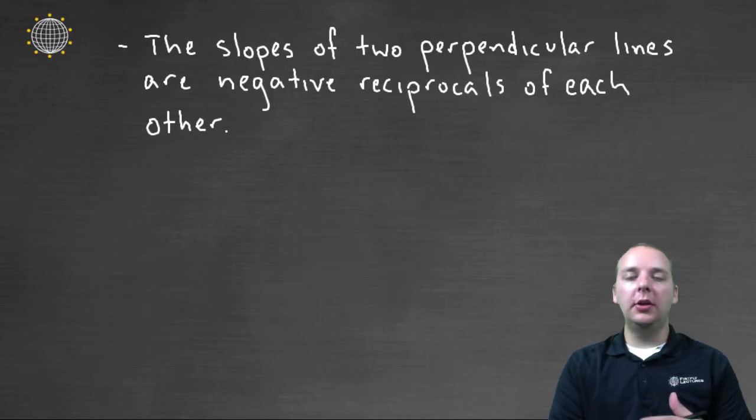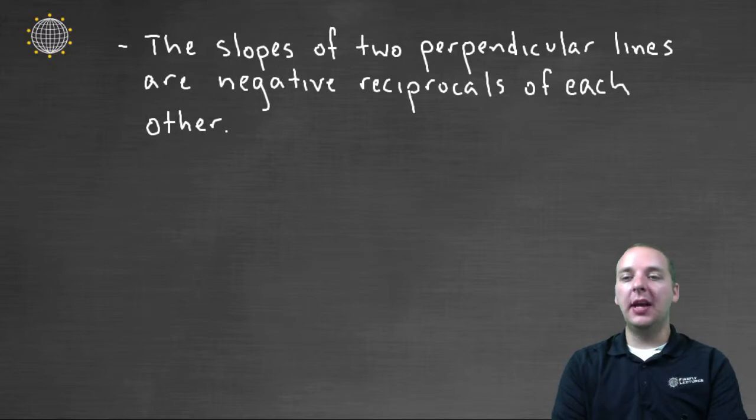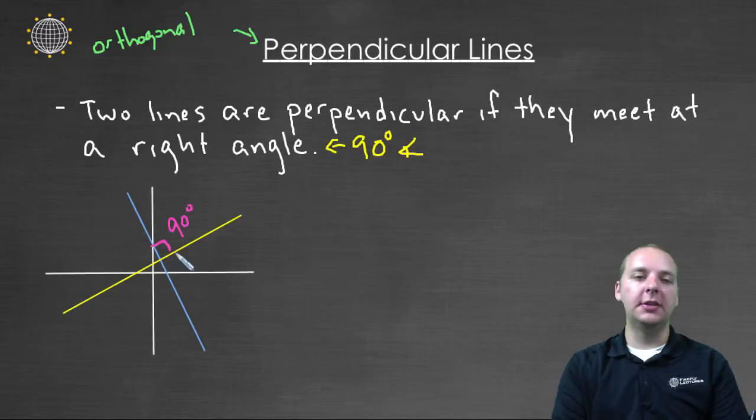Alright, now that's all well and good if we understand what perpendicular means, but given two equations of lines, how would you know if they're perpendicular to each other? Because we can't even really trust our eyes, because I don't know if I could tell the difference between like eighty-nine versus like ninety or ninety-one. So we also need like an algebraic way of telling whether two lines are perpendicular or orthogonal to one another.